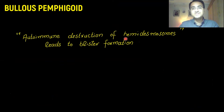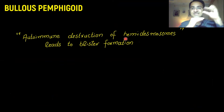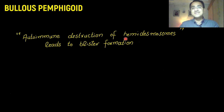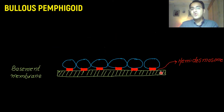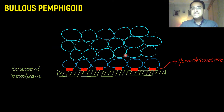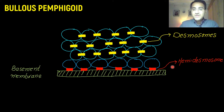A hemidesmosome is a structure that holds the cells of the skin attached to the basement membrane. Normally, cells of the skin are attached to the basement membrane by hemidesmosomes, and the cells on top are attached to each other by desmosomes. Hemidesmosomes are essentially the glue that holds the cell attached to the basement membrane.